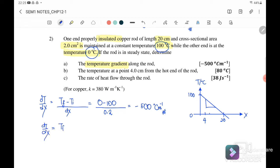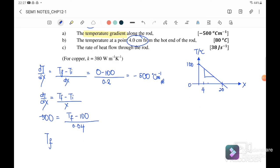Since the temperature gradient is the same along the rod, I will substitute negative 500 equals T final at 0.04 m. So the final temperature at the point at 4 cm is equal to 80 degrees Celsius.